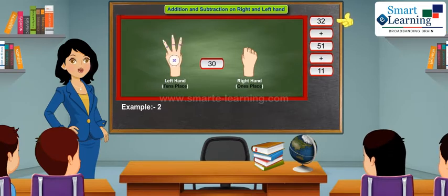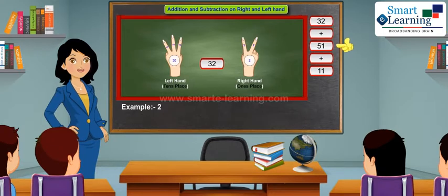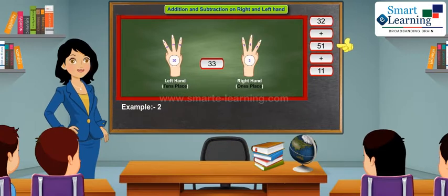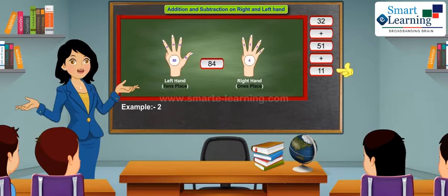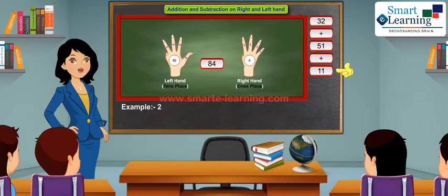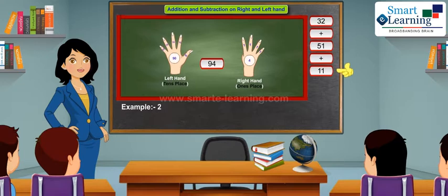Take 32 on your left and right hand respectively. In order to add 51, first add 1 on the right hand by taking 1 more finger, and 5 on the tens place by taking the thumb of your right hand. In order to add 11, add 1 more on the tens place by taking 1 more finger on your left hand.